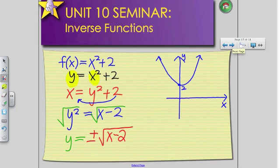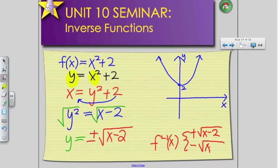So that means my inverse function, f negative 1 of x, is going to be equal to positive square root of x minus 2 and the negative square root of x minus 2. This is going to represent the graph of my inverse function.